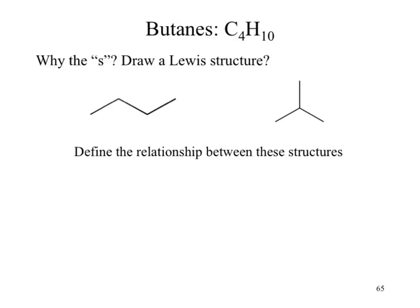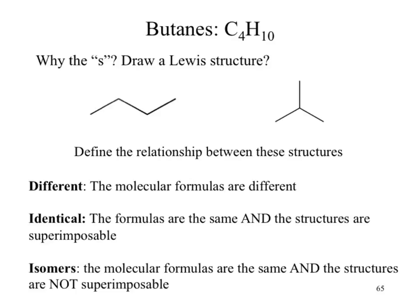What is the relationship between these two structures? They have the same formula — does that make them the same compound? No. We already said we would name them differently. In standard English 'different' means they have different formulas, but these have the same formula, so we can't call them different. This is where we invent a new term: isomers. 'Different' means the formulas are straight up different. 'Identical' means the structures are the same and they are superimposable. 'Isomers' means the formulas are the same but the structures are not superimposable.